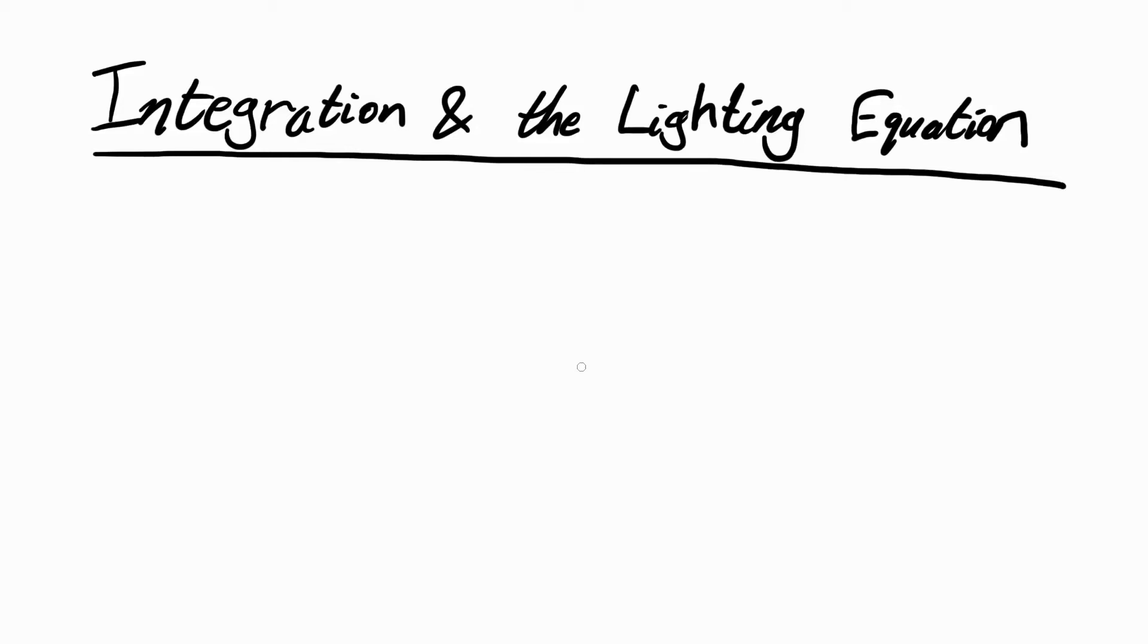Hello, in this video we're going to talk about integration and the lighting equation. First, the lighting equation is a mathematical formula that describes how any particular point in our scene should be lit. And this equation includes an integral. So first we're going to talk about what integration is, and then we're going to talk about what the lighting equation is, and we're going to break down all the parts in it and explain what they all mean and why they're there, because it isn't the prettiest looking formula. But first of all, what is integration?